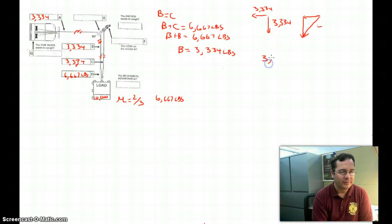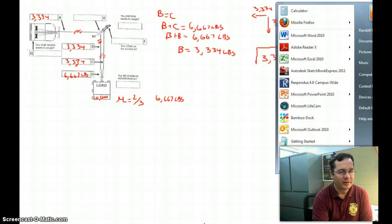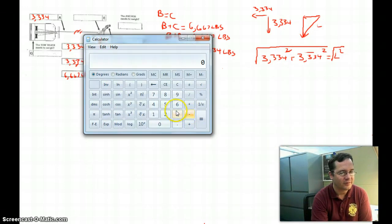So 3,334 squared plus 3,334 squared equals L squared. How do I get to just L? Simply take the square root of both sides. When I take the square root of both sides, that just cancels the exponents. This is the kind of thing you want to use a calculator or a spreadsheet for. There's no sense in crunching these numbers longhand.